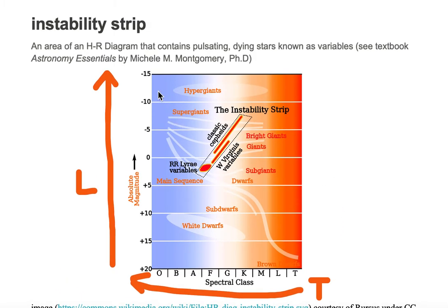We have a diagonal running from upper left to lower right, known as the main sequence. Any object on this main sequence is stable in size - it doesn't change over a short period of time. Objects above or below the main sequence are either dying or forming.